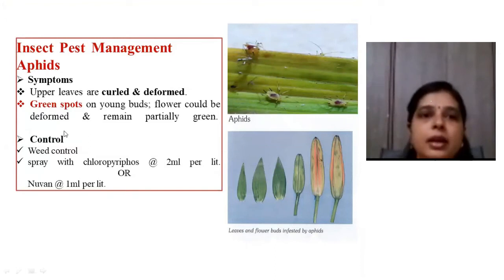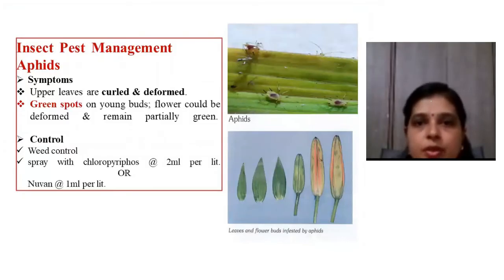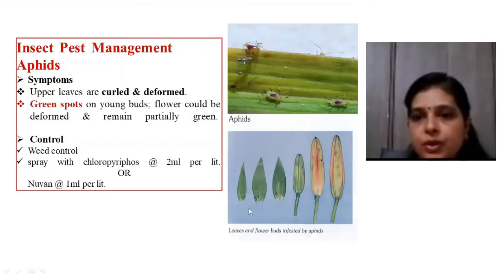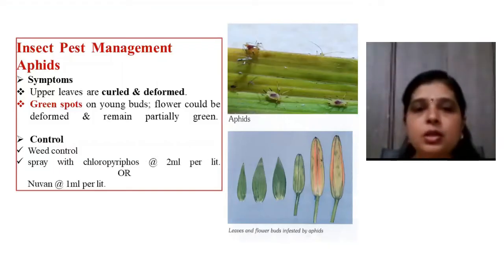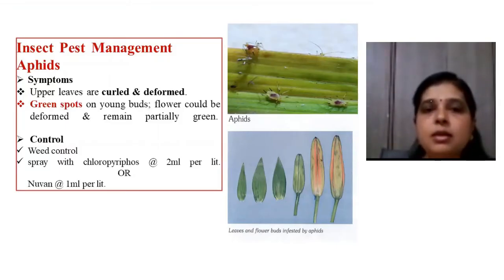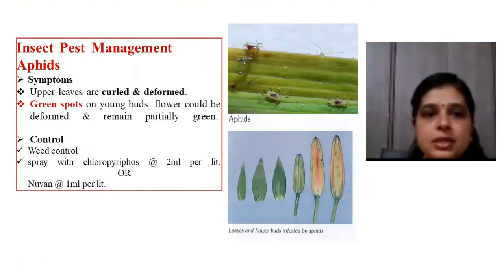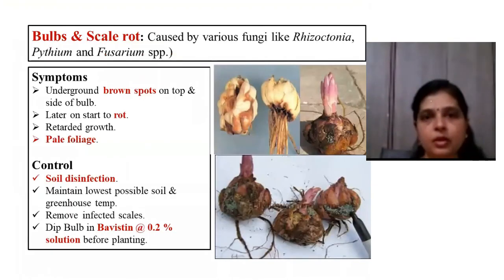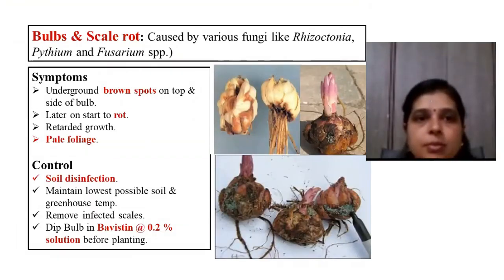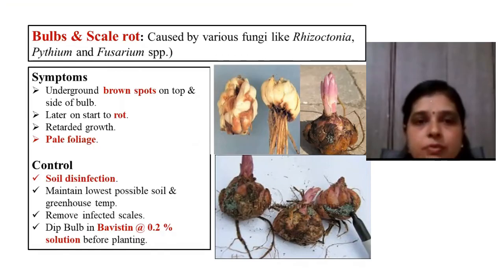Lilium is attacked by a number of insect pests and diseases. The most important pest is aphids. When aphids attack lilium, leaves become curled and deformed. Green spots develop on young buds and flowers become deformed and remain partially green. For control, weed control is necessary, or spray chlorpyrifos at the rate of 2 ml per liter. The important disease is bulb and scale rot, caused by fungi like Pythium, Rhizoctonia, and Fusarium species.